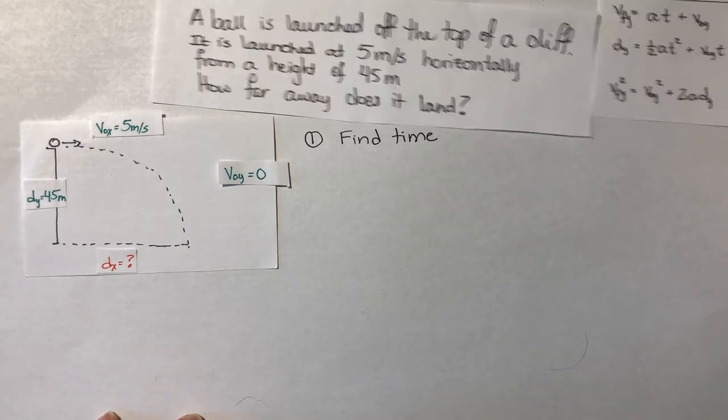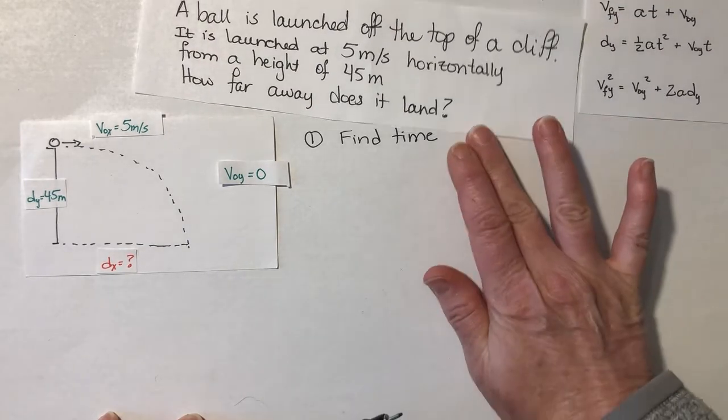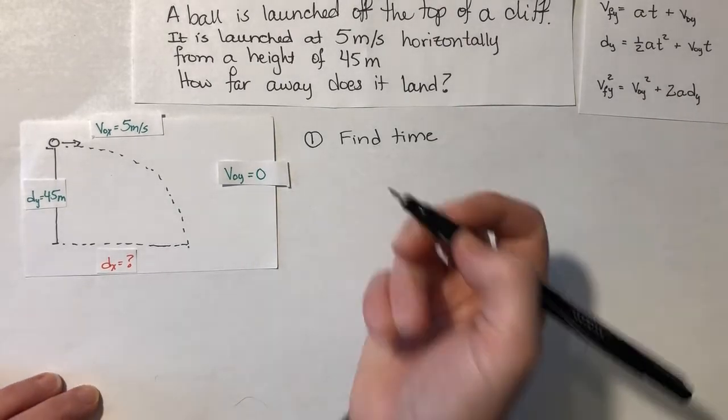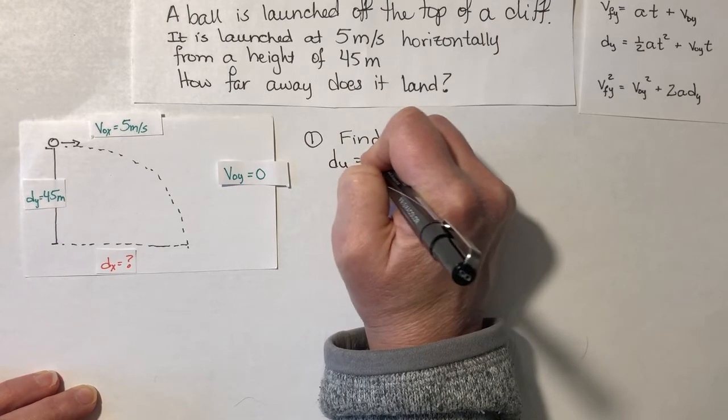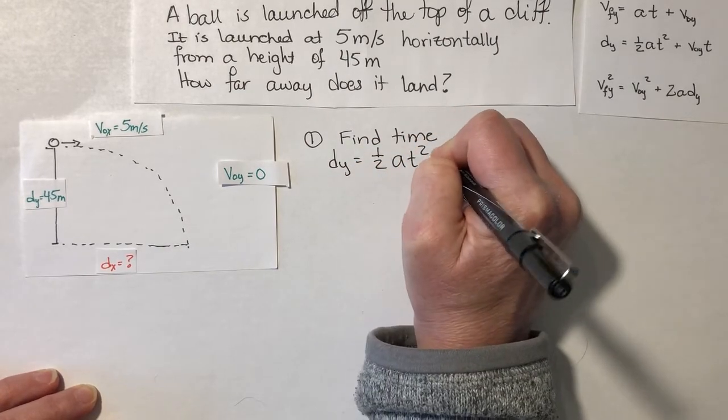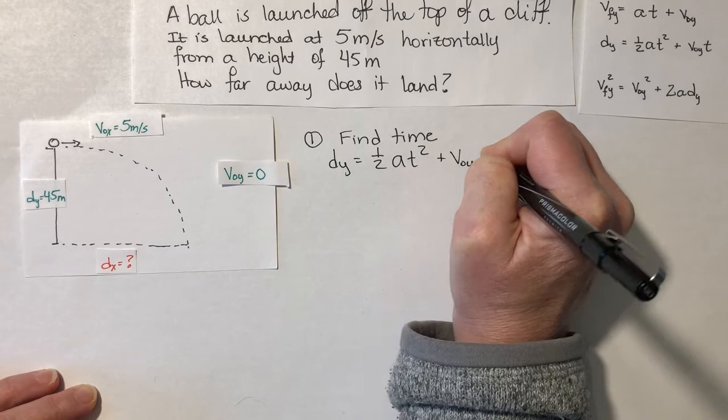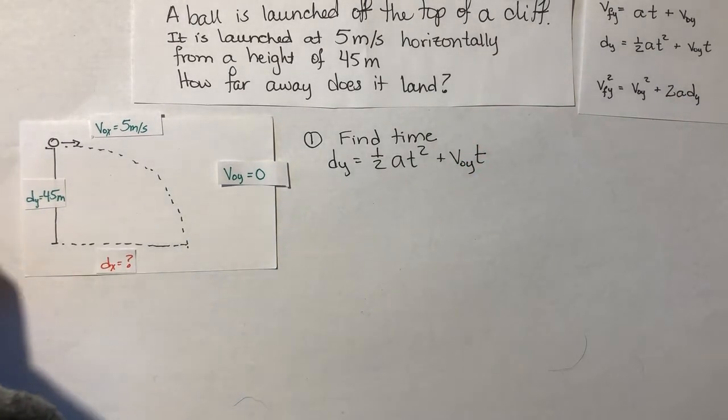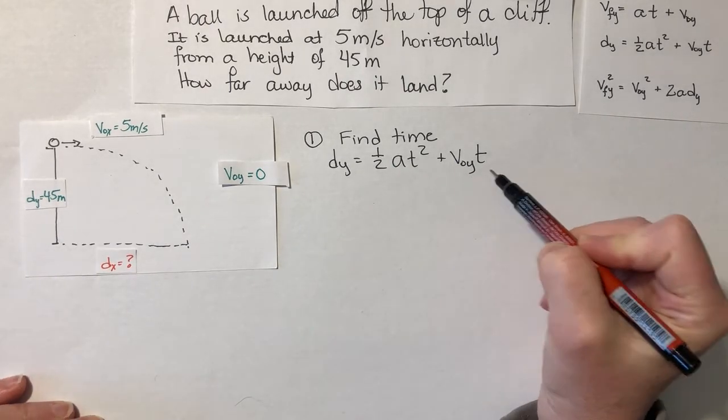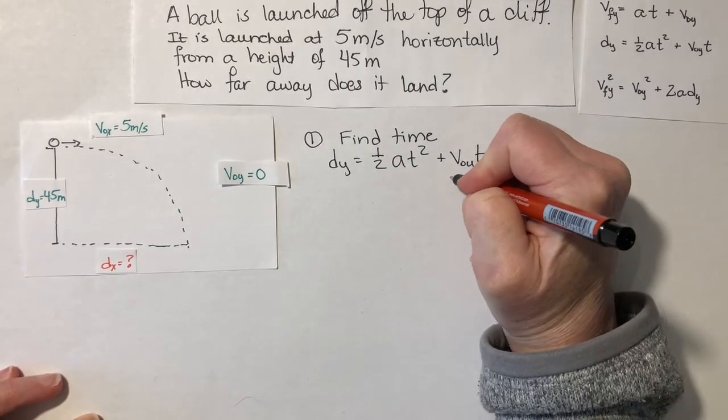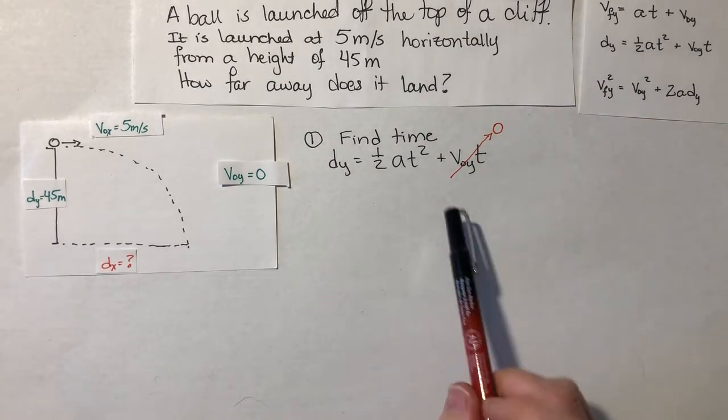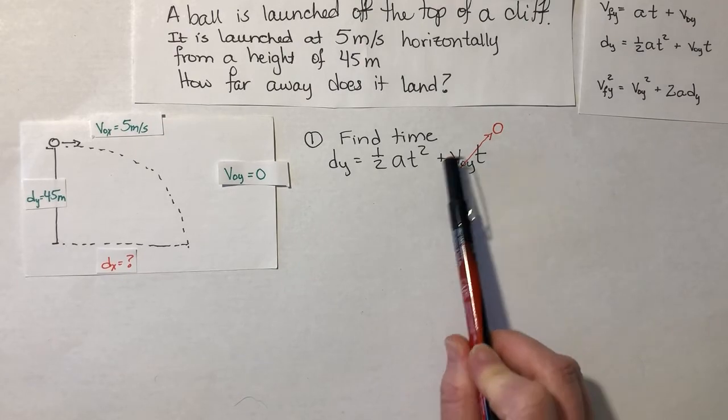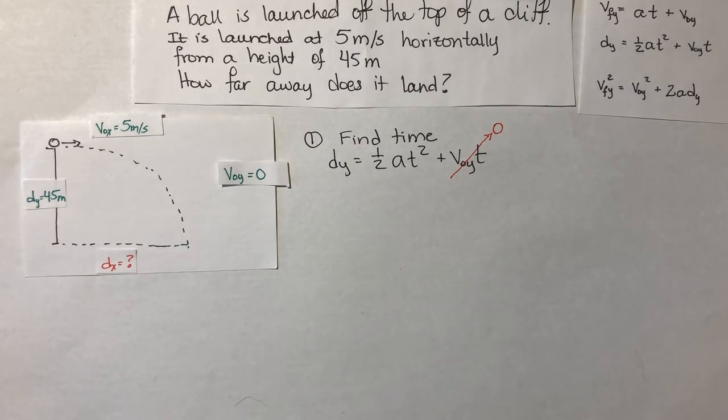So I will write it down now. So dy equals one half acceleration times time squared plus v0 in the y direction times time. Now I'm writing out the whole equation, even though some of you are already looking at this thing, but I said that I don't have a v0y. So I can just draw an arrow through this with a zero. Just tell me that because v0y is zero, this whole factor is going to be zero, this whole value.